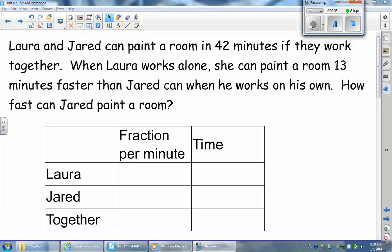Laura and Jared can paint a room in 42 minutes if they work together. When Laura works alone, she can paint a room 13 minutes faster than Jared can when he works on his own. How fast can Jared paint a room?